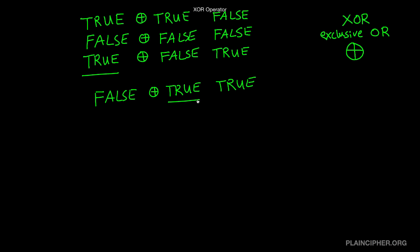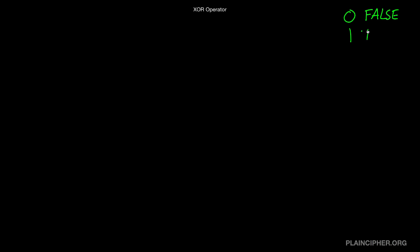Now, in cryptography, instead of dealing with true and false, we deal with binary numbers 0 and 1. You can think of 0 as being false and 1 as true. And we do the exact same thing with 0s and 1s as we just did with true and false.